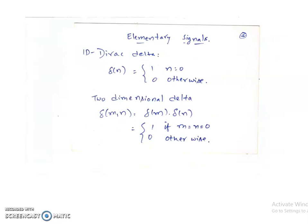Let us look at the elementary two-dimensional signals. We have the one-dimensional discrete delta function: delta(n) equals 1 for n equal to 0, and 0 otherwise. For the two-dimensional case, it is a separable function: delta(m, n) equals delta(m) multiplied with delta(n), which means delta(m, n) equals 1 if m equals n equals 0, and 0 otherwise.